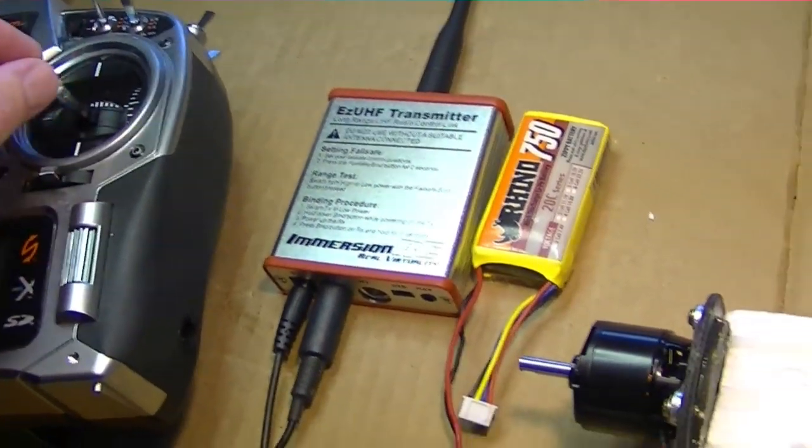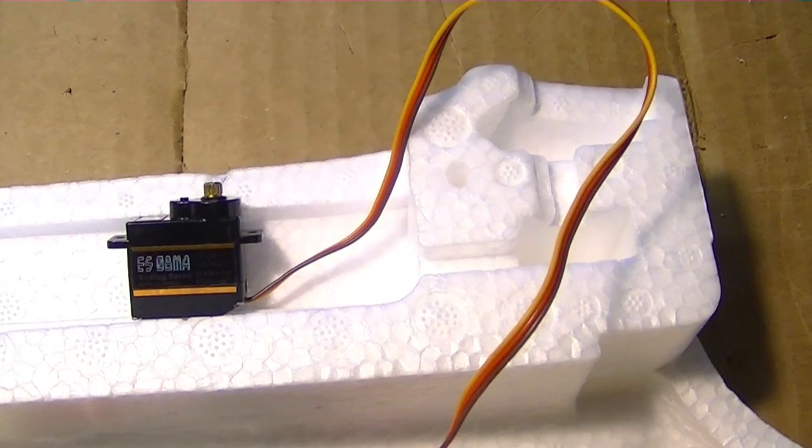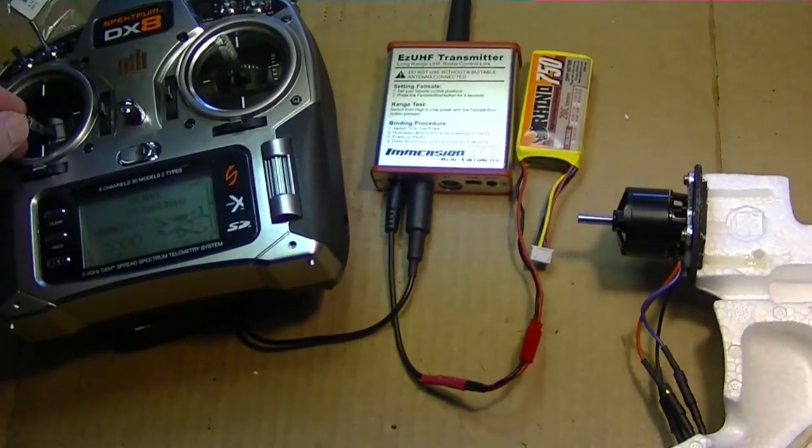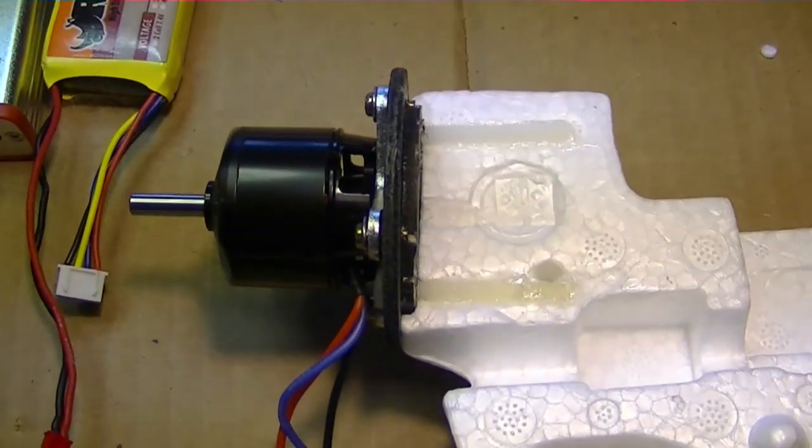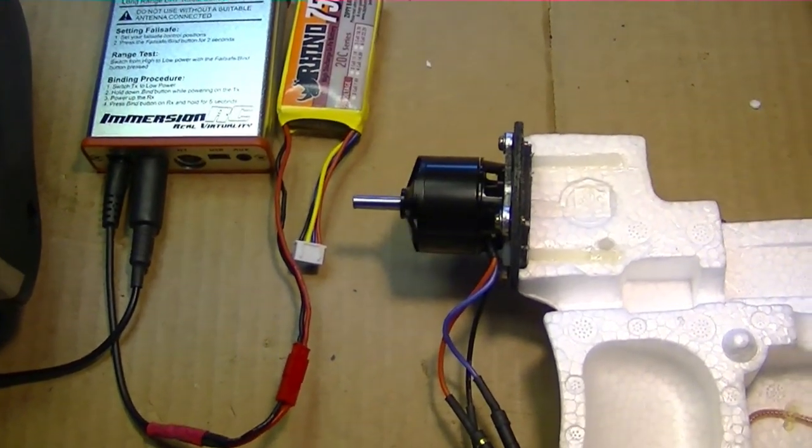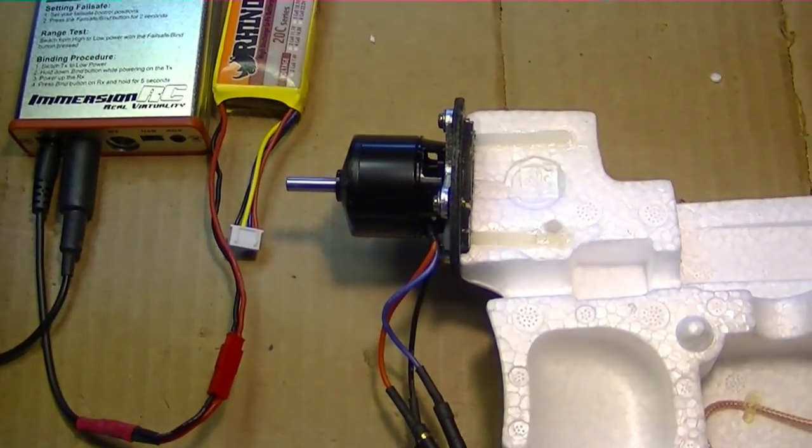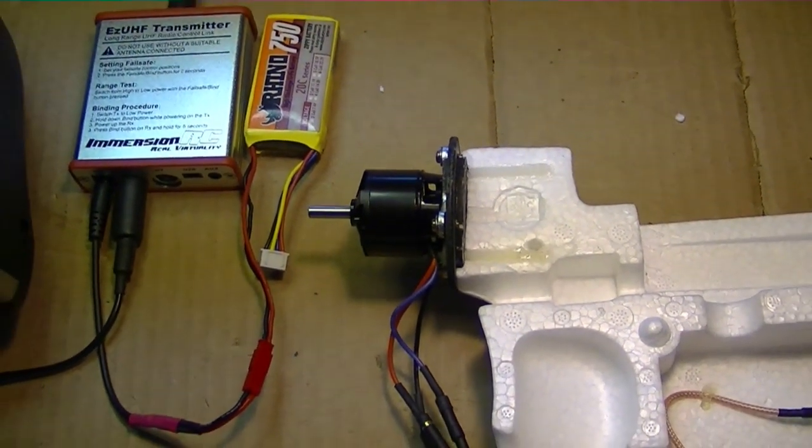So let's do a quick test here. First of all, let's just check the servo. I'm going to move the aileron stick over here, so you can see the aileron servo is working. And let's try the motor. So that's that motor.